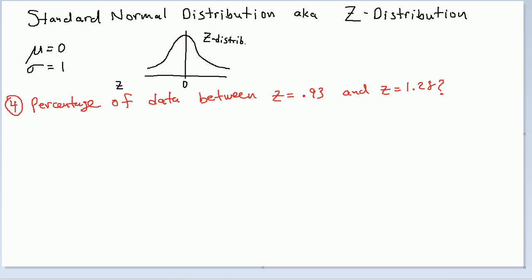Hi guys, welcome back to question 4. We're still in the z distribution, the standard normal, mu is 0, sigma is 1. Now let's answer this question. This is slightly more advanced. We want to know the percentage of data between z equals 0.93 and z equals 1.28.